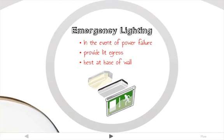Emergency lighting is used in the event of a power failure. It provides a lit path of egress and is usually best at the base of the wall, in case there's a fire and smoke in the air and people need to crawl on the floor. These are typically battery-powered units, but are generally hardwired into the building's electrical system so the batteries can recharge. The general goals of emergency lighting are to avoid stress and panic. It's required at all exits and any aisles, corridors, passageways, and ramps that lead to an exit. General lighting and exit signs must be lit at all times while the building is in use. The easiest way to provide emergency lighting is to put some existing light fixtures on a separate circuit connected to an emergency power source.